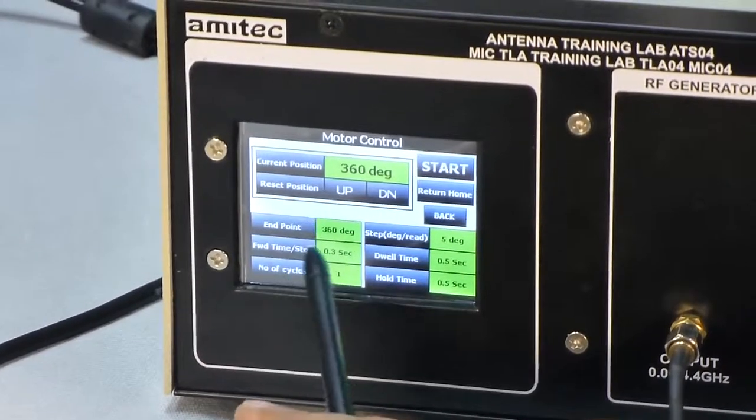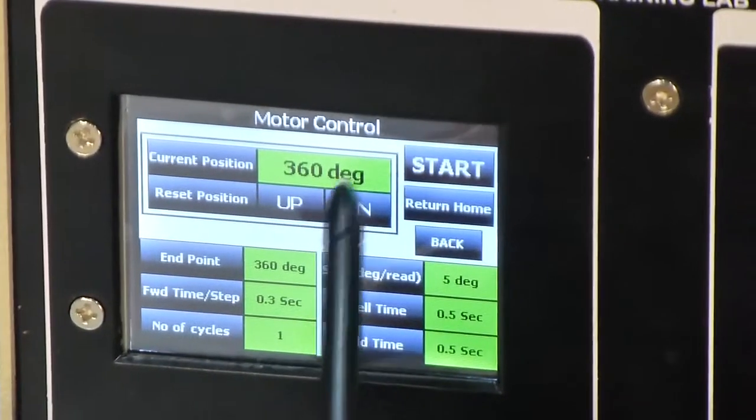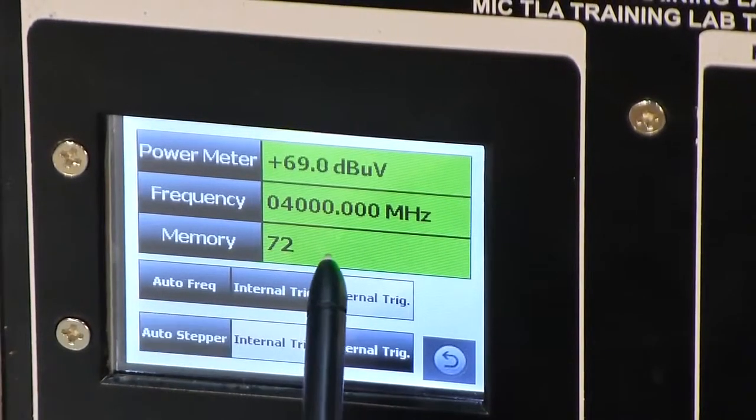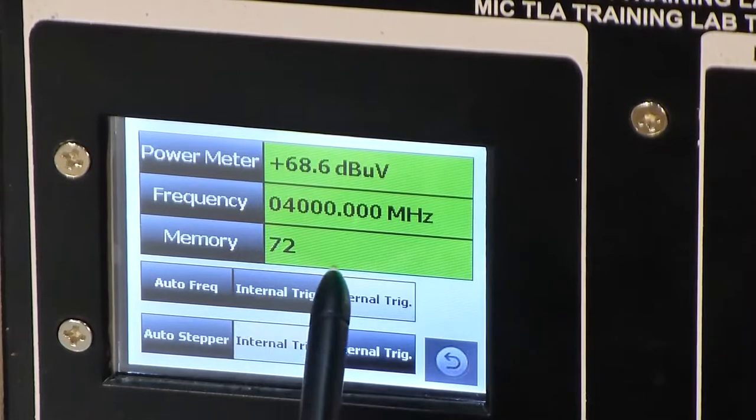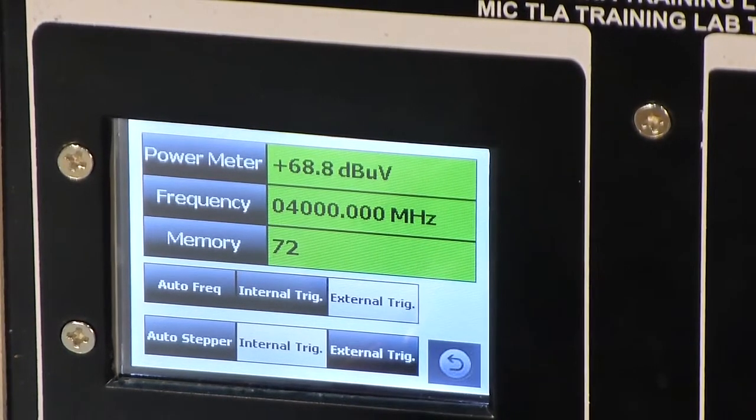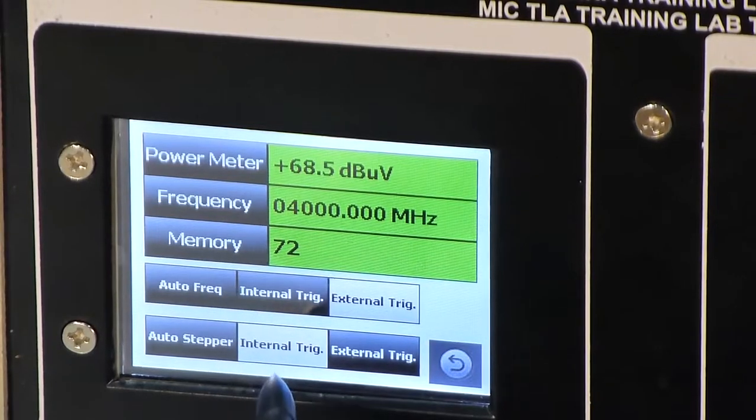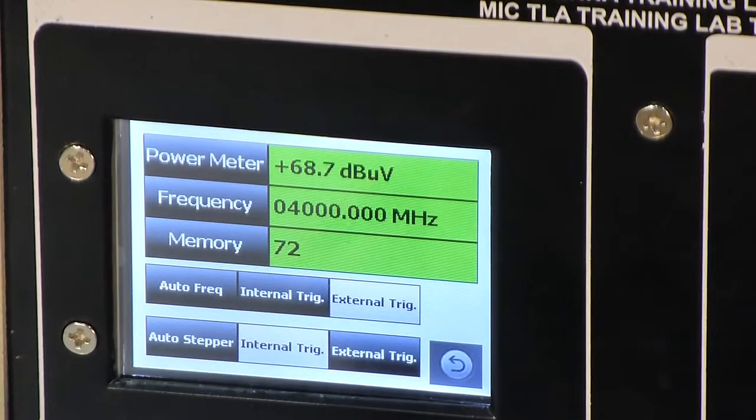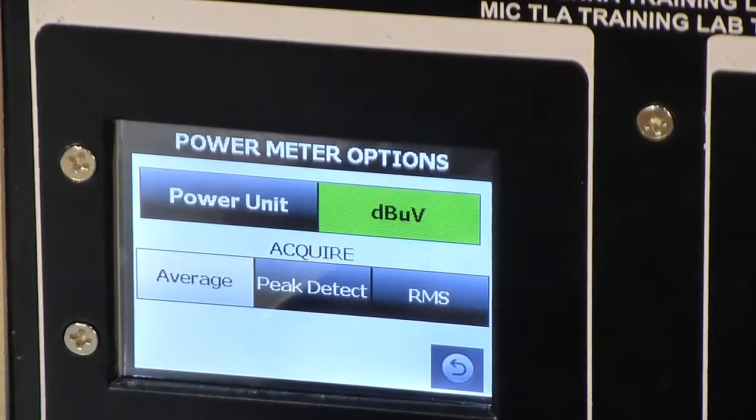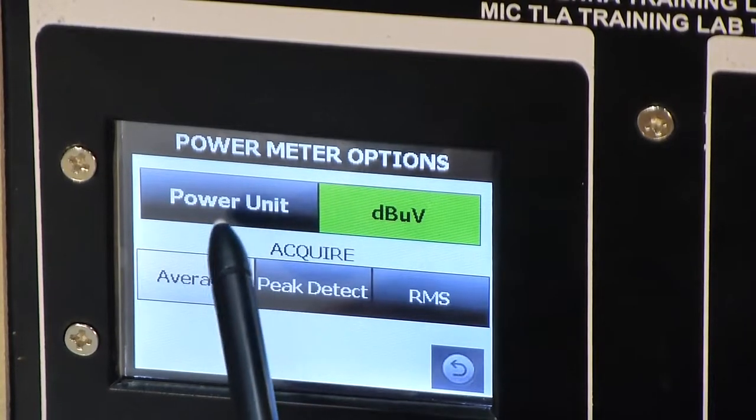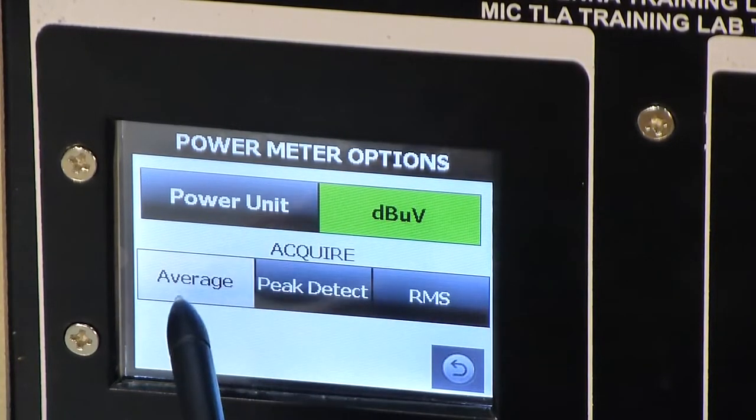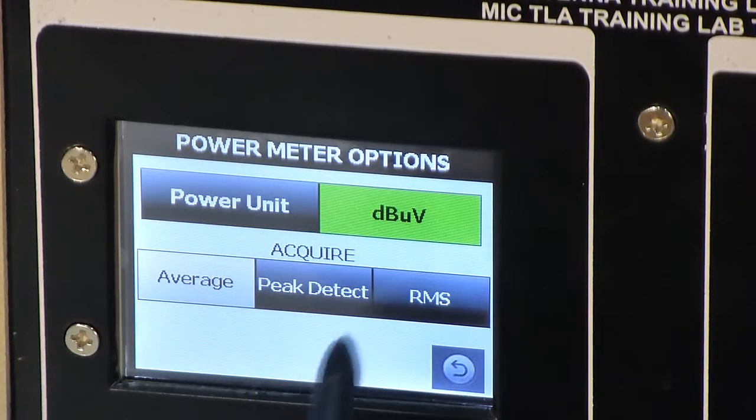Now the motor has taken a complete 360 degree rotation and current position is 360 degrees. When you go back to the power meter screen, now the memory location increased from 0 to 72. That means 72 power readings have been stored in internal memory of this instrument. You can take as many number of plots for different antennas, you can store memory locations till 1000. You can also change the power meter unit by pressing on this power meter button. Here you will see few options like power meter unit and acquire which is a technique used for acquiring the signal.